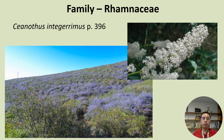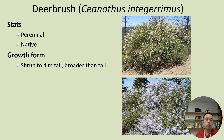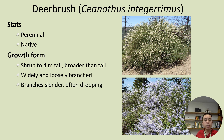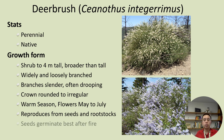Next up we have the Rhamnaceae family, and from this family we'll be talking about Ceanothus integrimus from page 396. Deerbrush, or Ceanothus integrimus, is a perennial native plant that typically grows as a shrub up to four meters tall and is usually broader than taller. It's often widely and loosely branched, with slender and drooping branches, and the crowns are rounded to irregular. It's a warm-season plant that flowers from May to June. It reproduces from seeds and can recover from its root stock, and the seeds germinate best after fire — a fire adaptation.